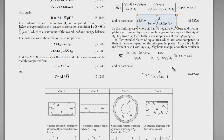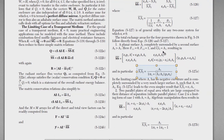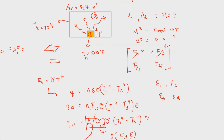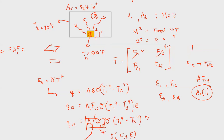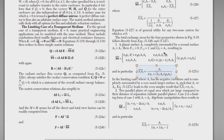The reason S1S2 reduces to A1 in this case is that F12 = 1 for the plate (it sees all surroundings). Translating to the S1S2 notation, small S1S2 = A1 × F12 = A1 × 1 = A1. So S1S2 is simply A1 in this enclosure.